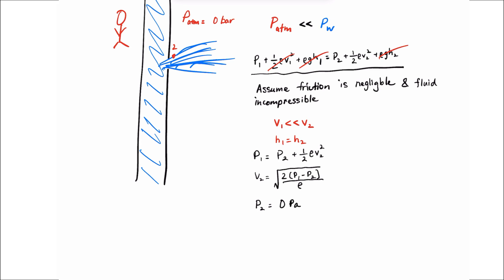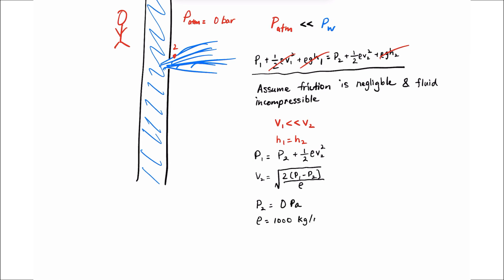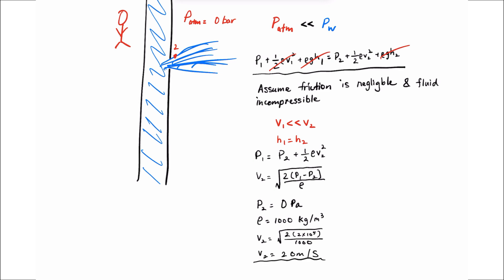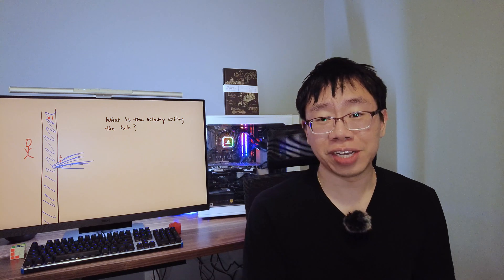So now we can solve for the velocity v2 and we get 20 meters per second as the final answer. So when you do these kinds of problems, don't just mindlessly plug and chug numbers. Try to really understand the applications of these equations and formulas.